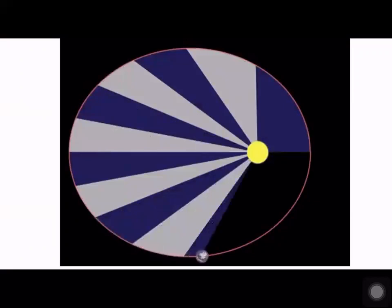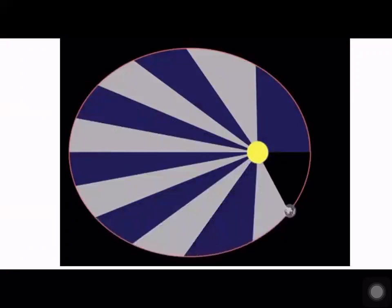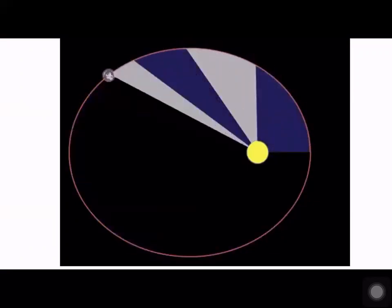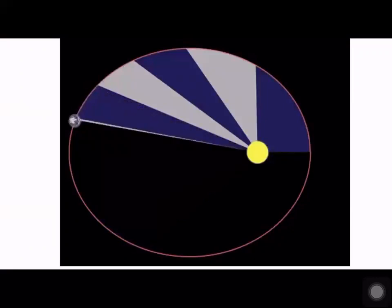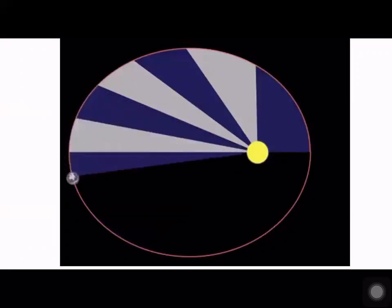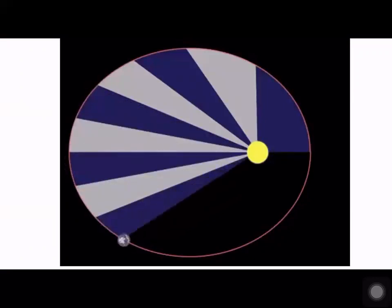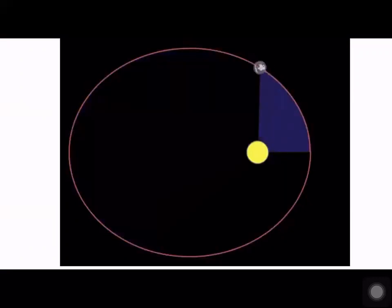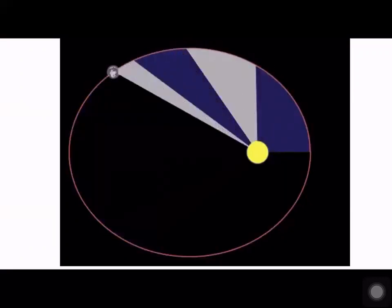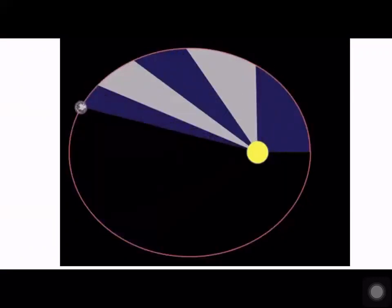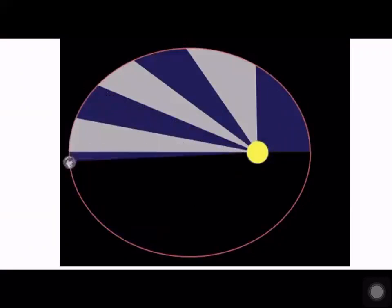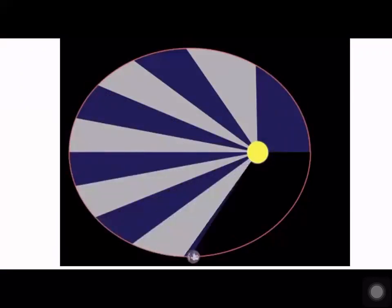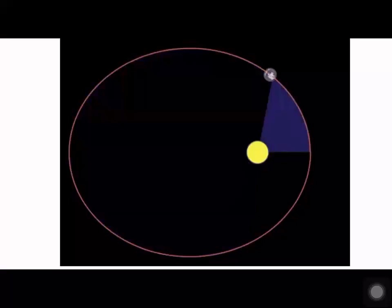This is called the law of areas. Looking at the gray portions in the diagram — as the earth moves around the sun, if each gray area takes 100 days, the area covered each time is the same in the orbit.